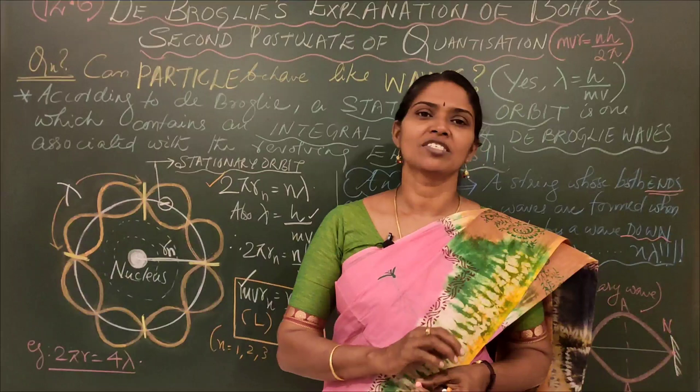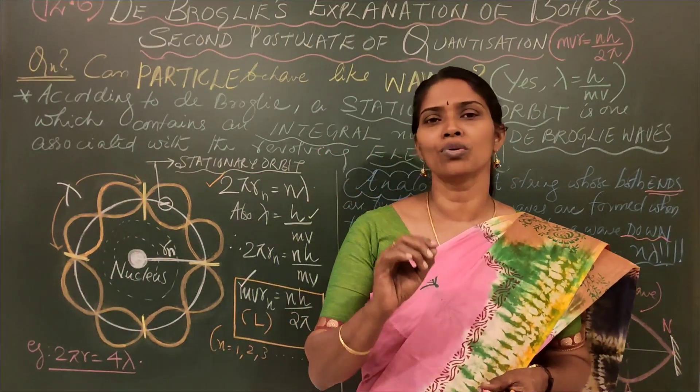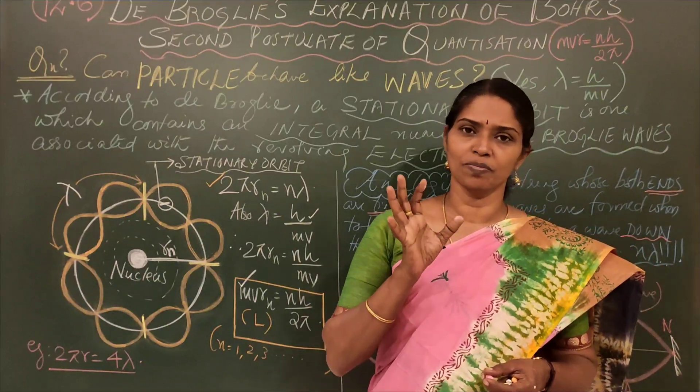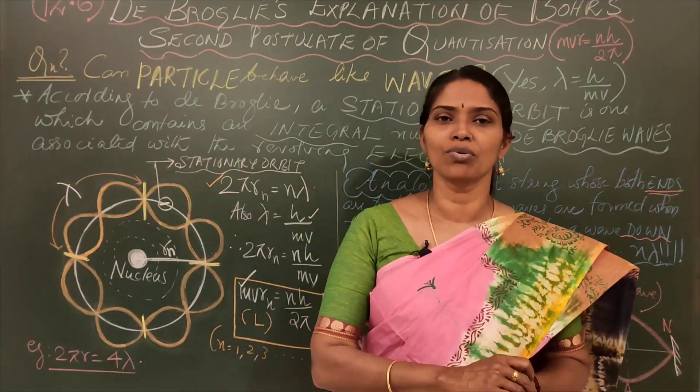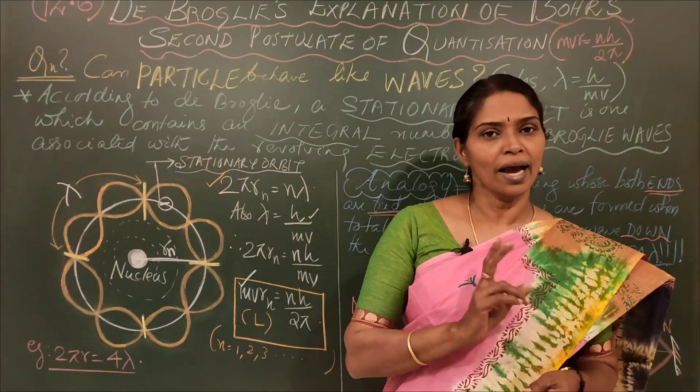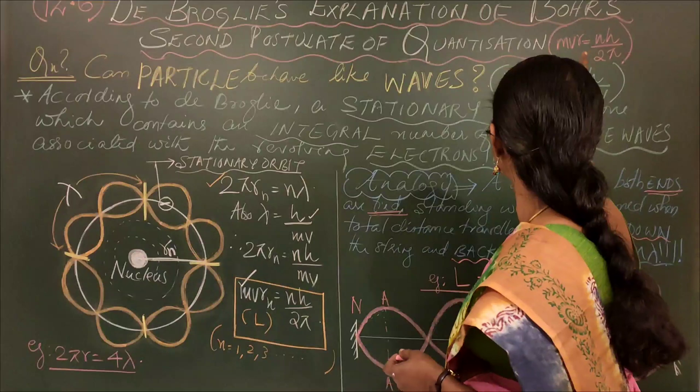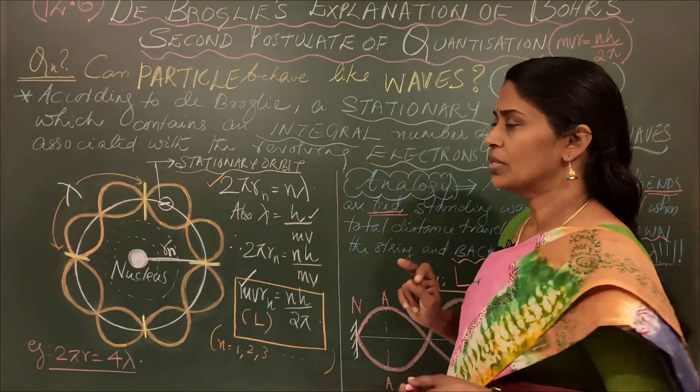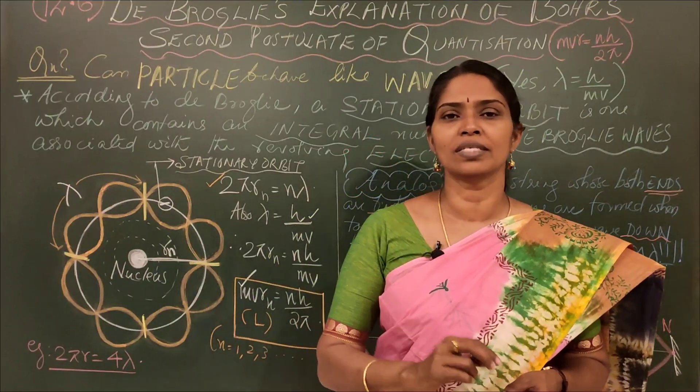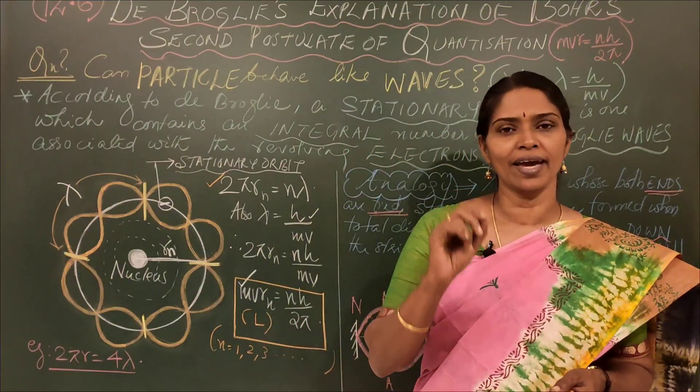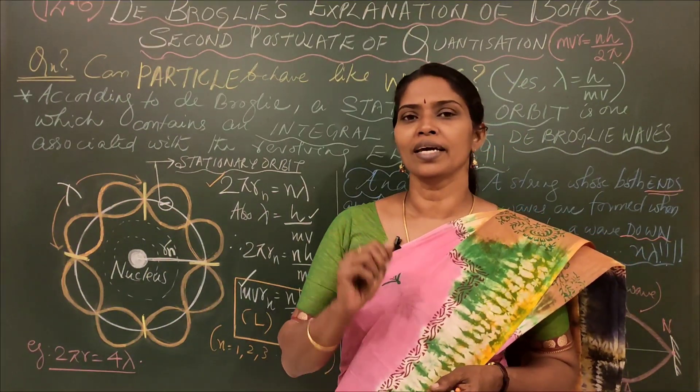In the previous video we discussed what is Bohr atom model, specifically the three major postulates of Bohr atom model, of which the second one was mvr = nh/2π, or angular momentum is an integral multiple of h/2π. That was done in the year 1913.